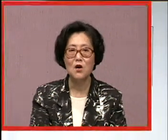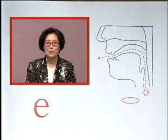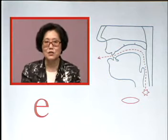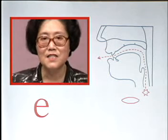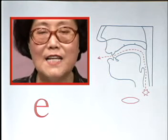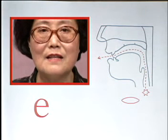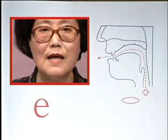第三个元音：/e/。我们在发 /e/ 这个音的时候，舌尖抵着下齿，舌前部稍抬起，比发 /iː/ 的时候低些，唇形呢是中长，牙床开得比 /æ/ 的时候宽，上下齿之间可容纳一个食指。